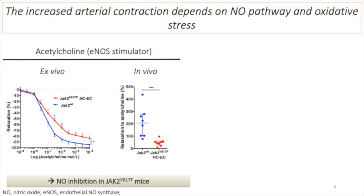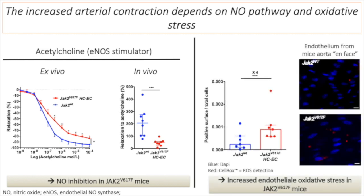Indeed, aorta from JAK2 mutated mice in red display impaired vasodilation in response to acetylcholine both ex vivo on the left panel and in vivo on the right panel. In addition, as you can see on the right panel, reactive oxygen species production was 4 times higher in the aortic endothelium from JAK2 mutated mice than in controls.